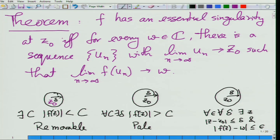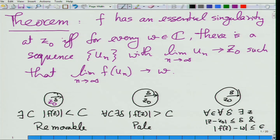These three are mutually exclusive conditions because inside a small disk you can find very large values for f(z) as well as very small values for f(z). So let us prove this.